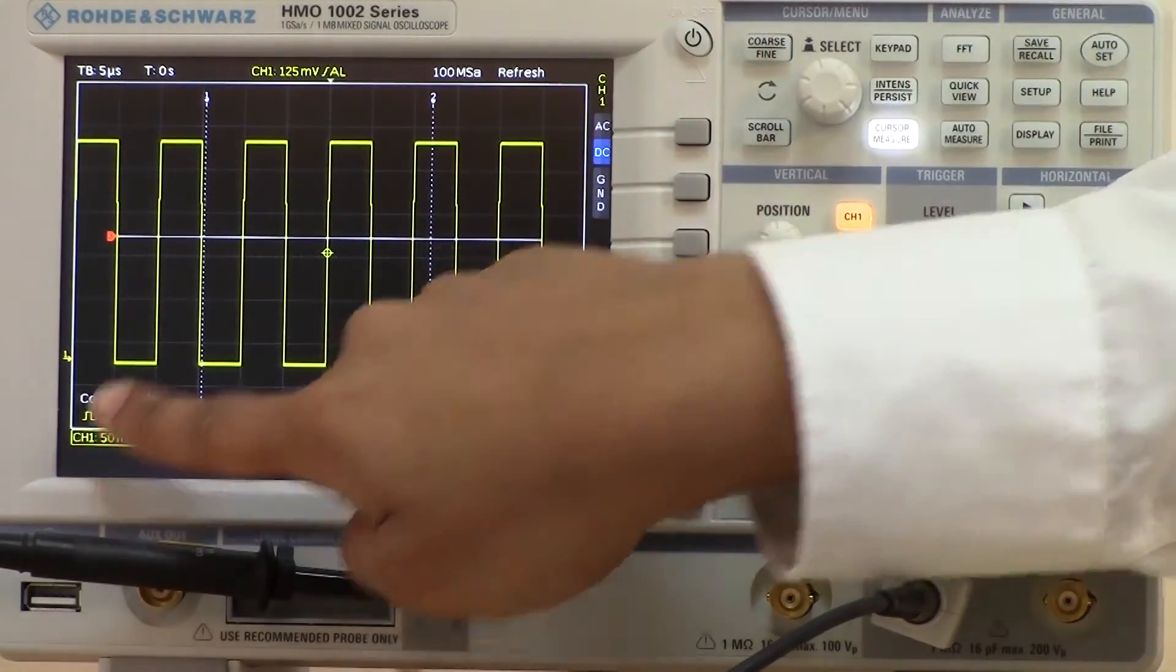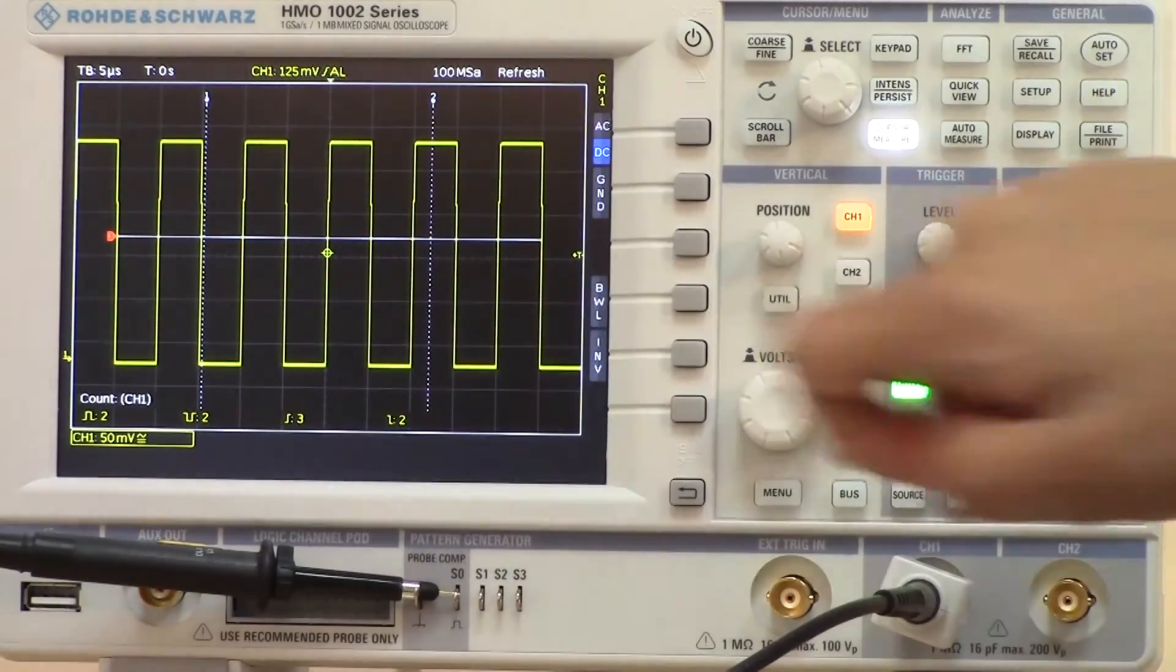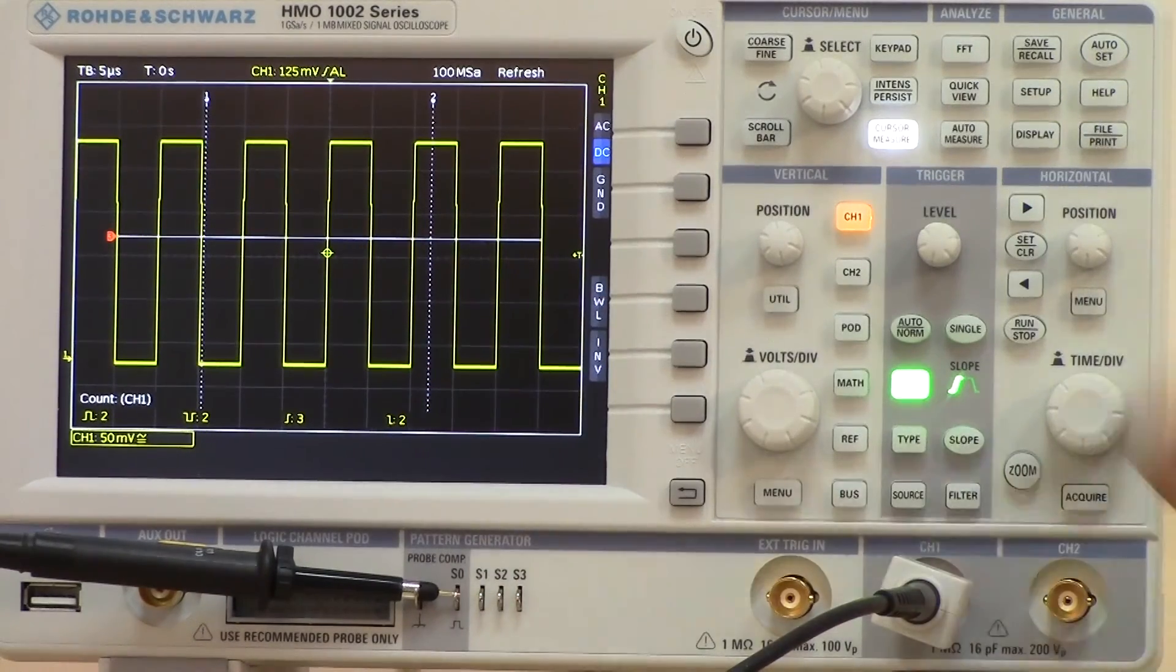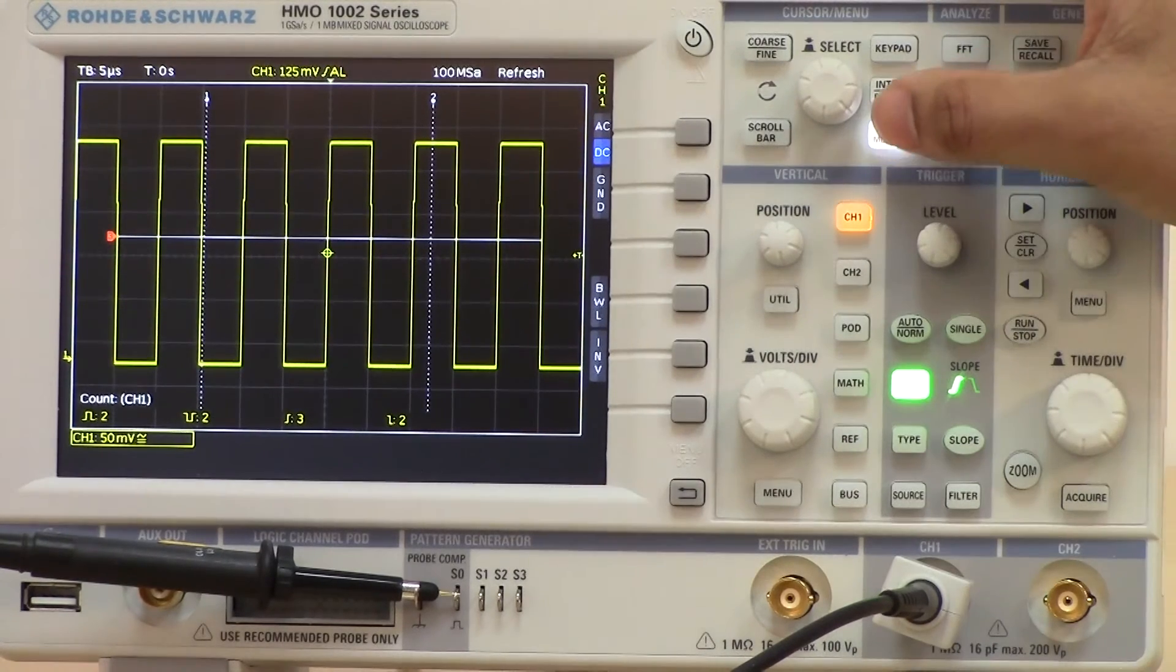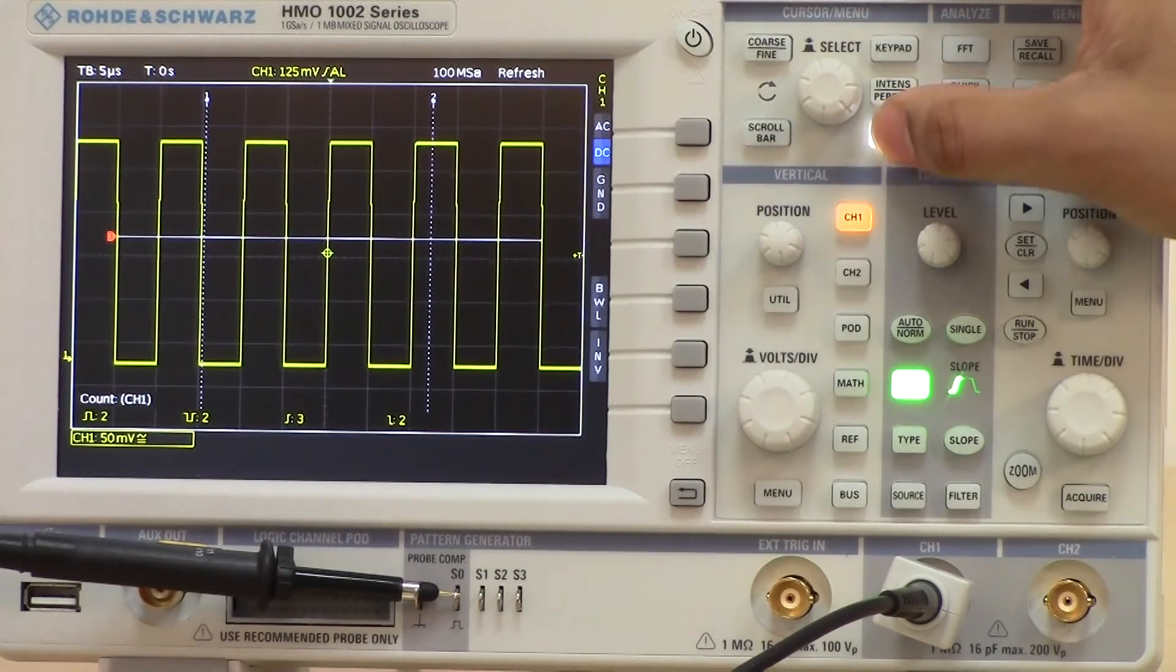What you get there is how many positive rises we have, how many negative rises we have, and also the rising edge and falling edge count. So it helps if it's a bursted signal or a protocol decode.